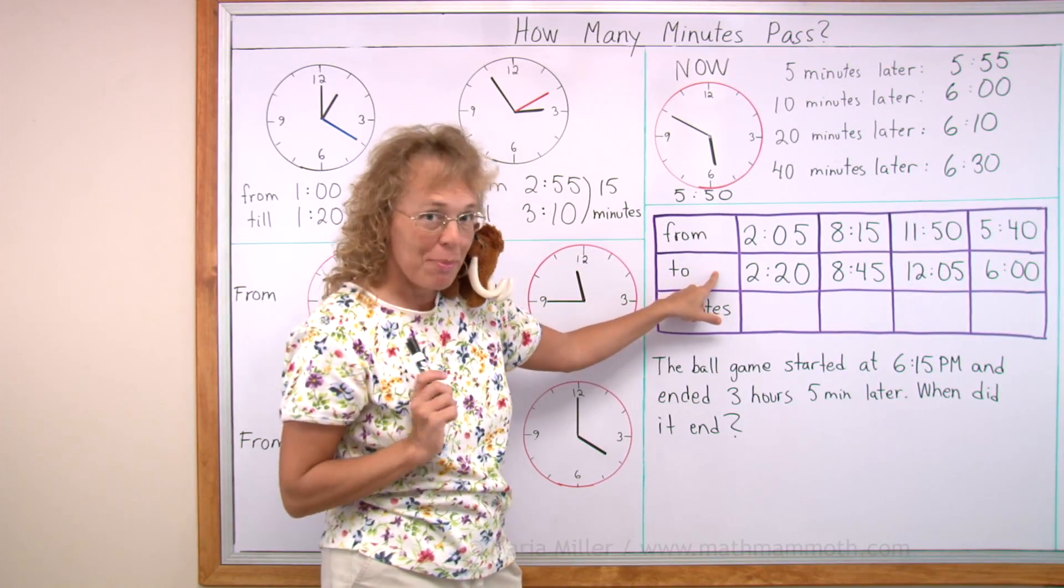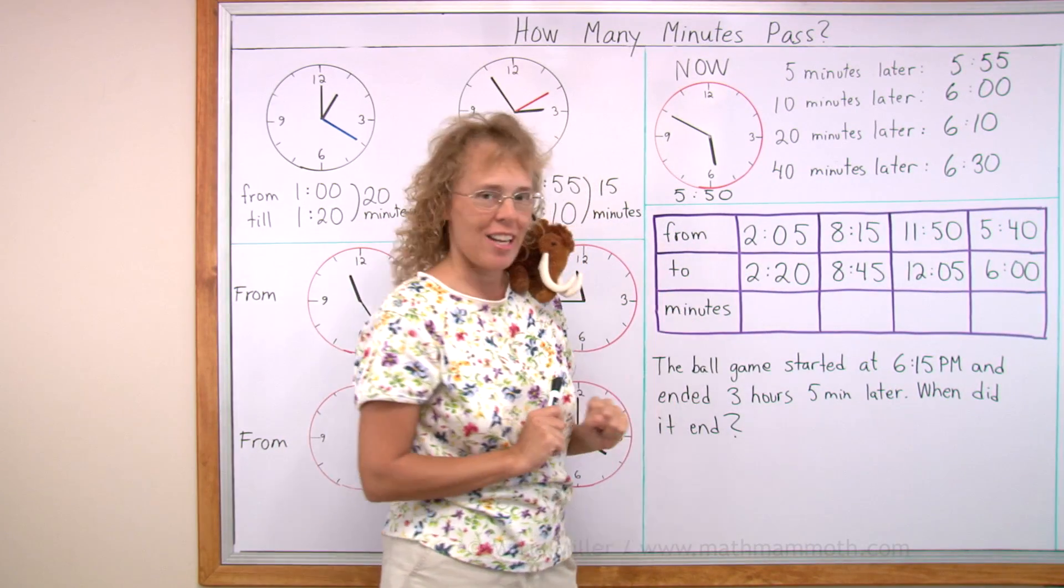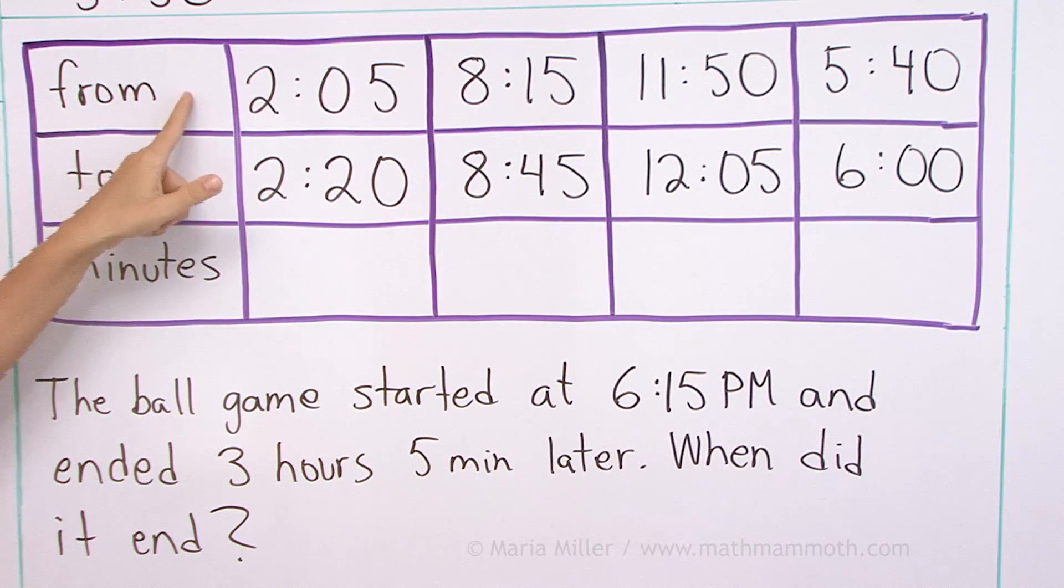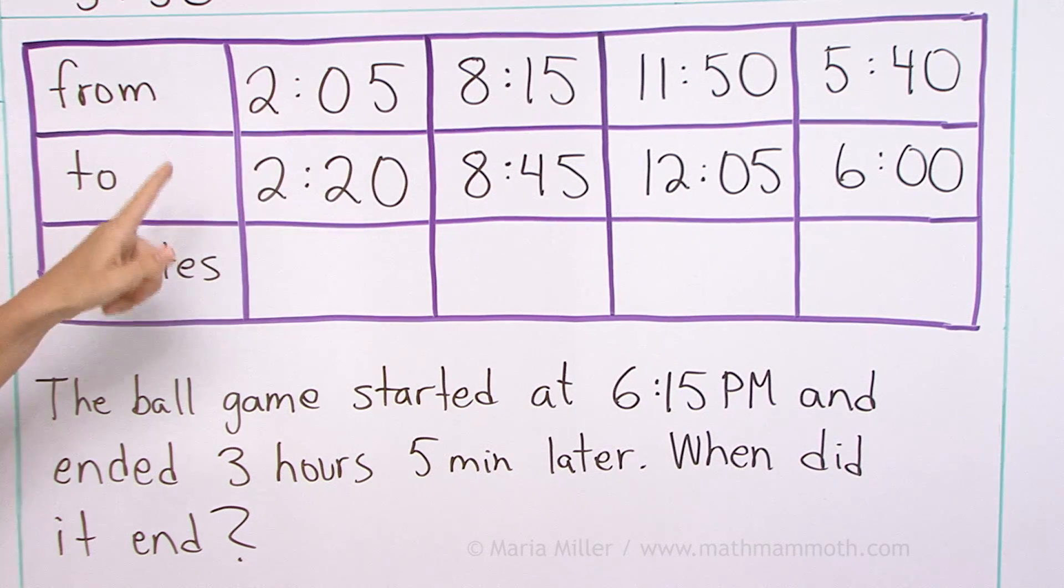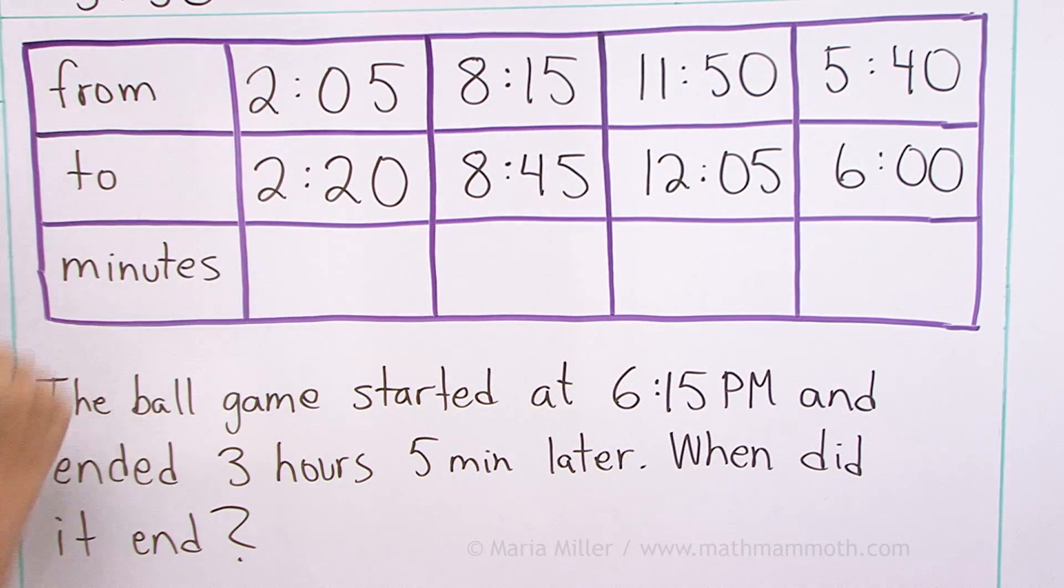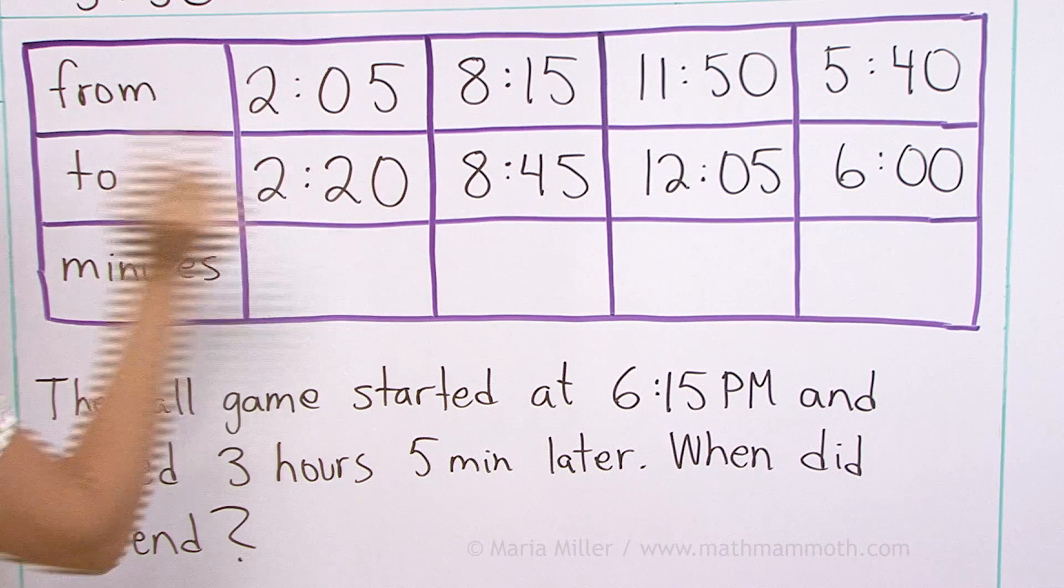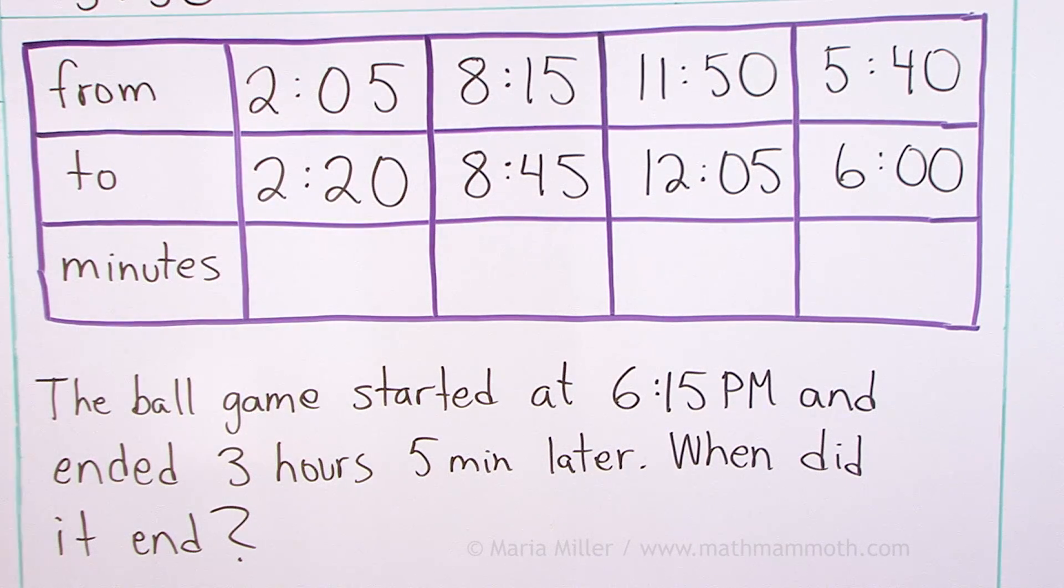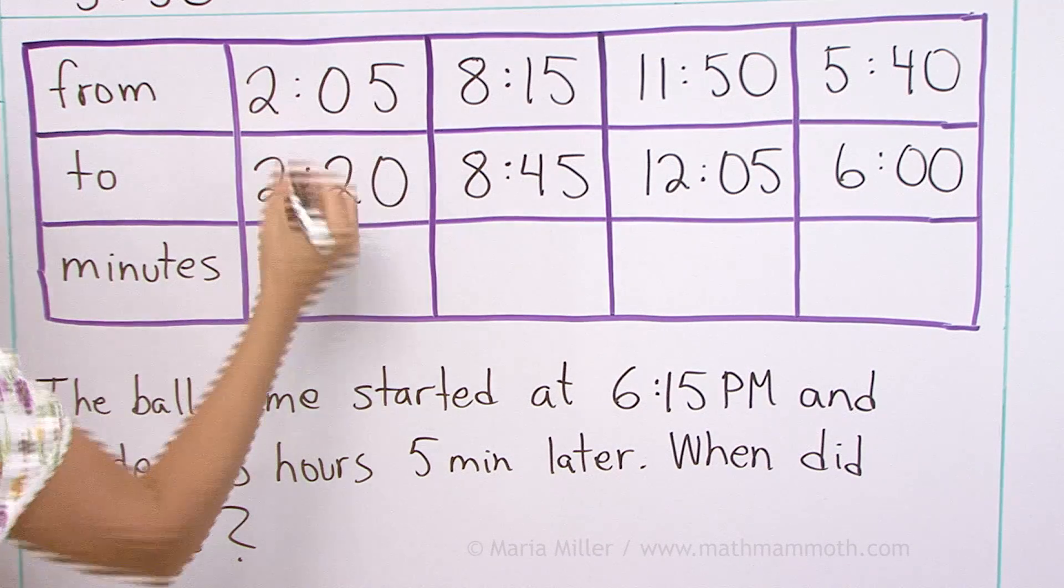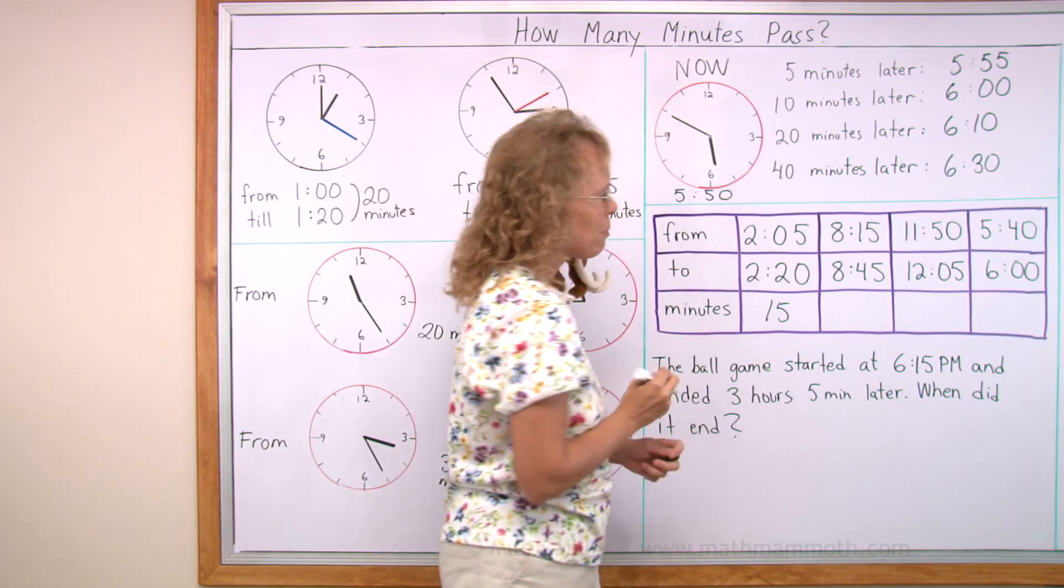How many minutes pass between these two times? From 2:05 to 2:20. You can notice that these hours are the same, two hours. So just look at the minute amounts. 5 minutes, 20 minutes. And look at the difference. What's the difference of 5 and 20? You can subtract even to find that it is 15 minutes. That's pretty easy, right?